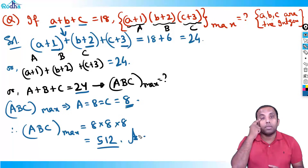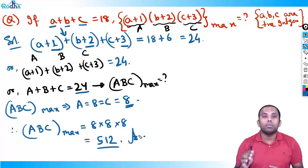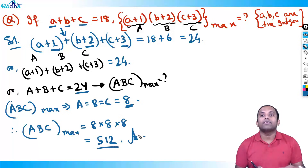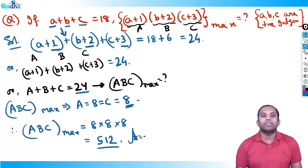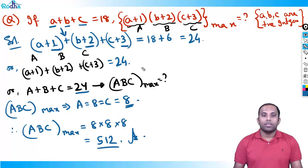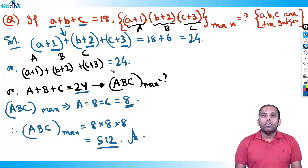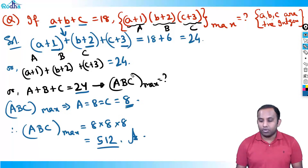So 512 is the answer. The key step was substituting capital A, B, C for easy understanding. I hope it is clear. We will continue in the next video. Thank you.